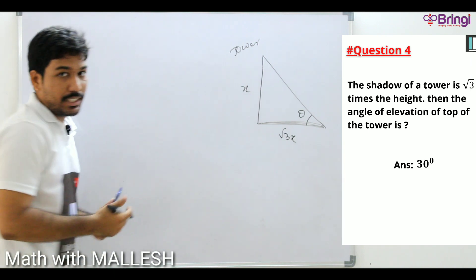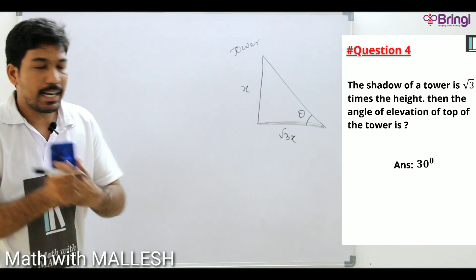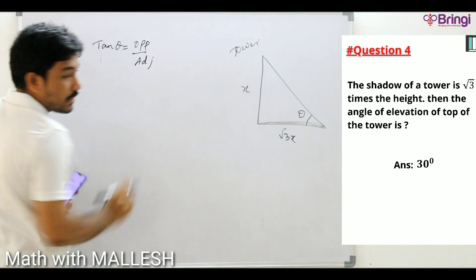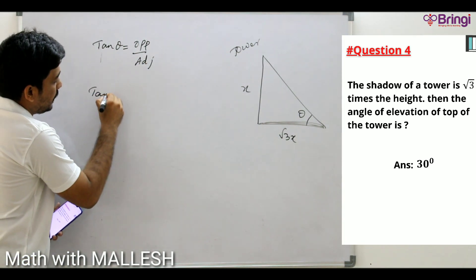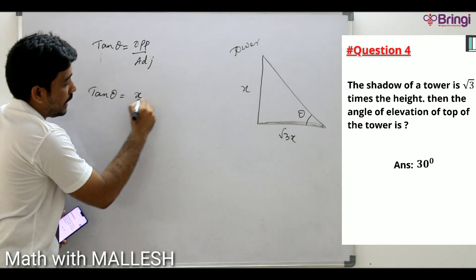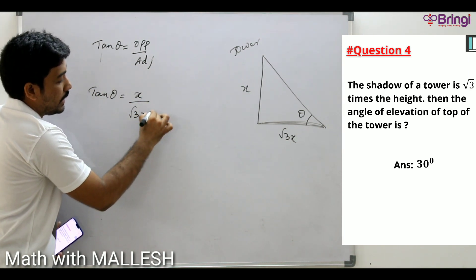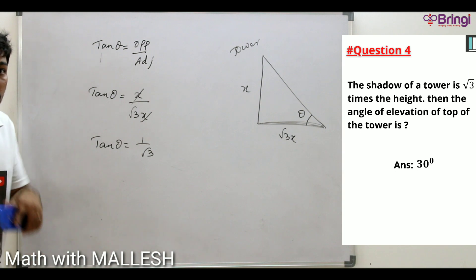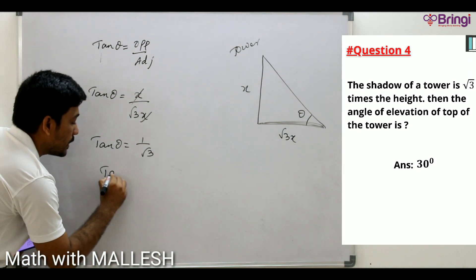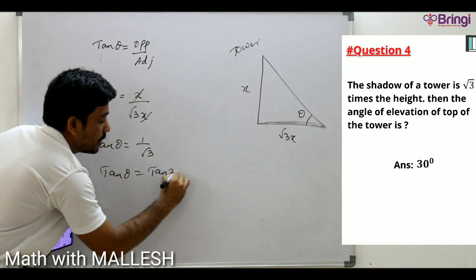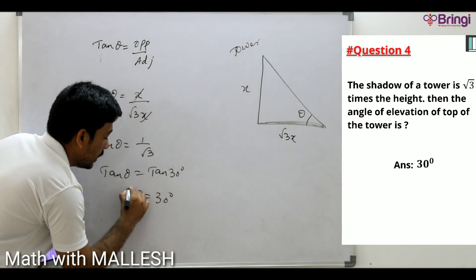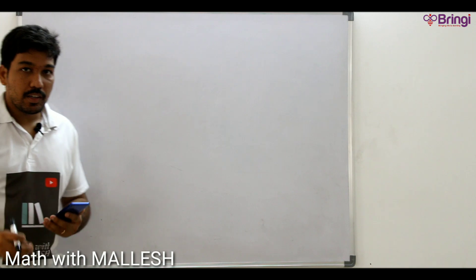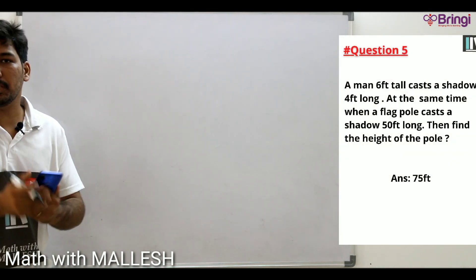We have opposite and adjacent, so apply tan theta. tan theta = opposite/adjacent = x/(√3·x). The x cancels, giving tan theta = 1/√3. Since tan 30° = 1/√3, theta equals 30 degrees. Moving on to question five, which is a very important and most repeated question in SSC CHSL and SSC CGL prelims.